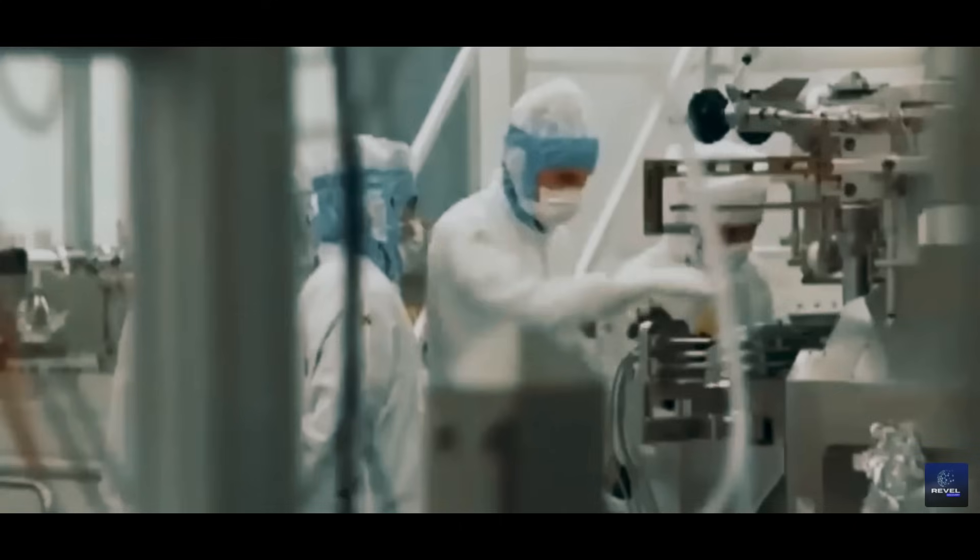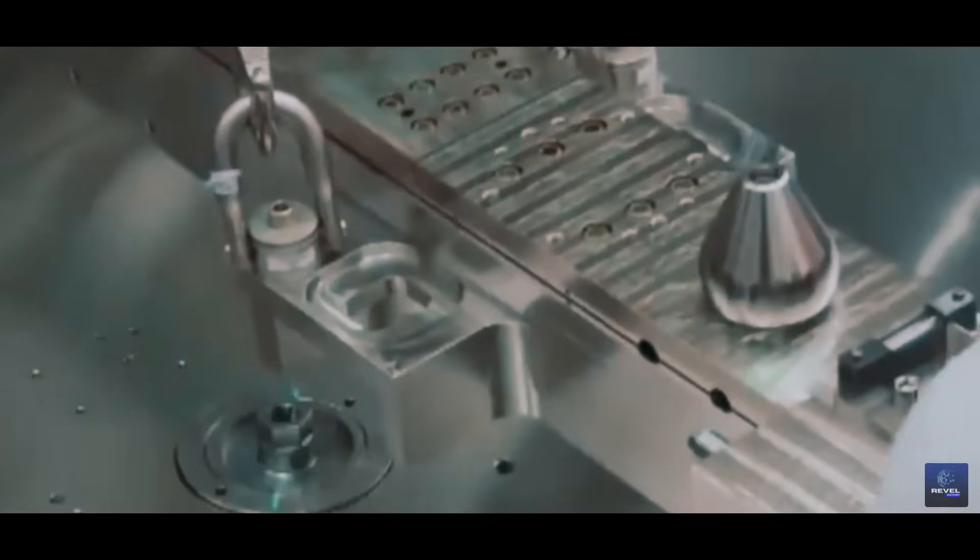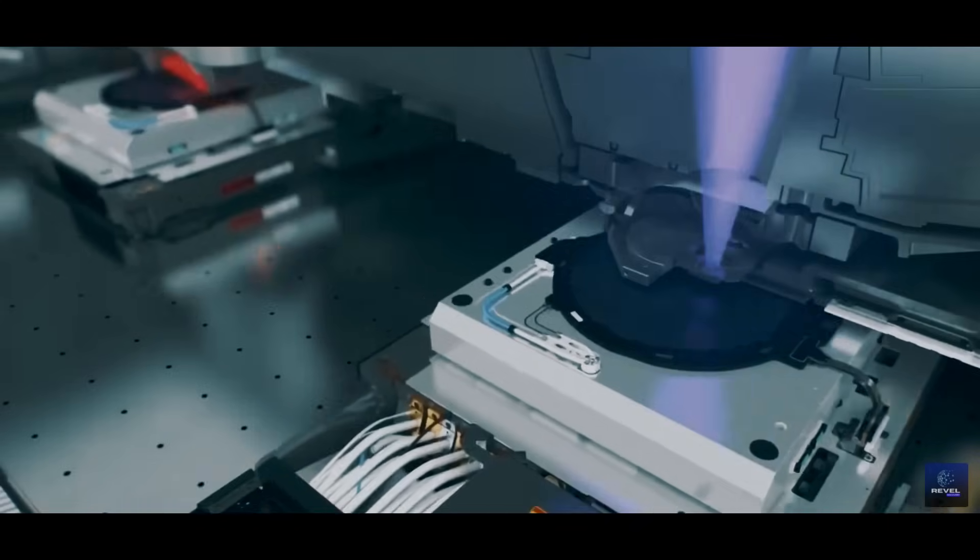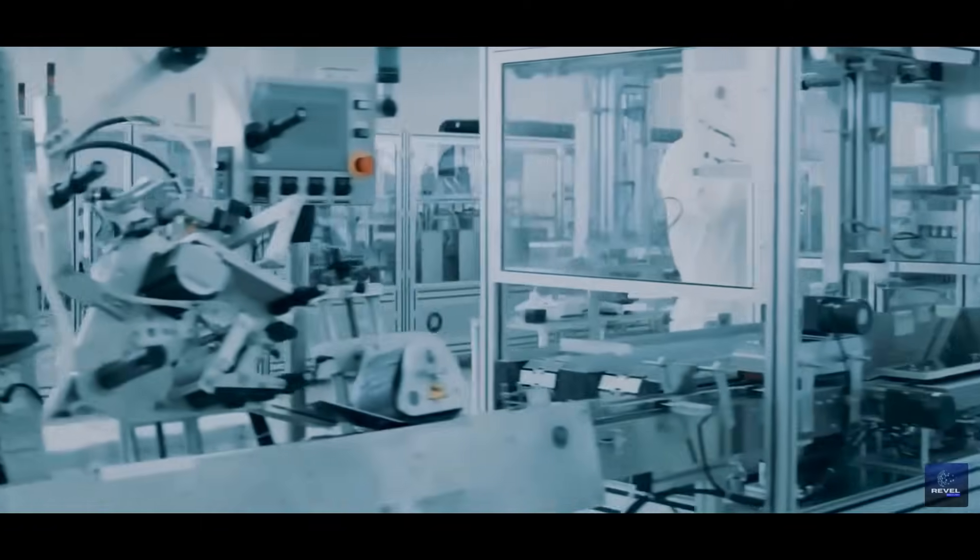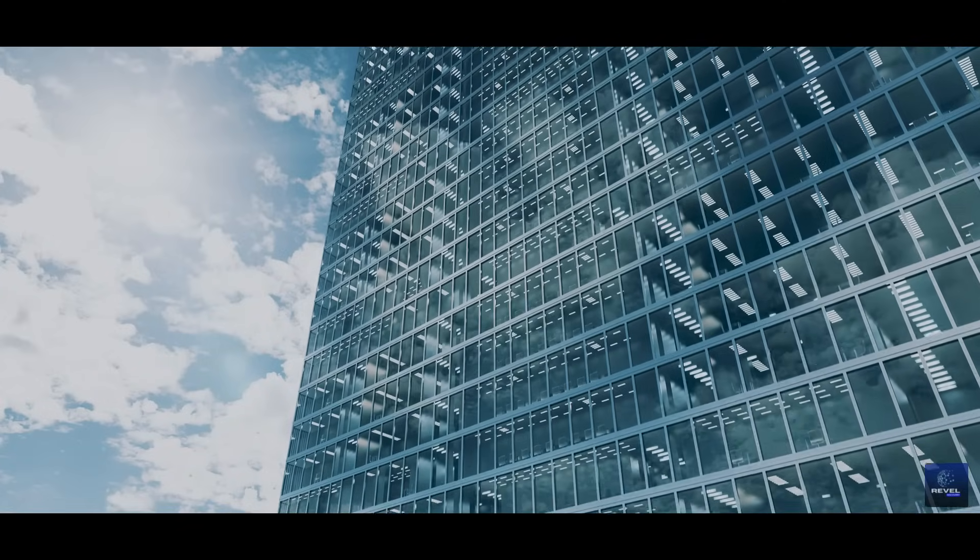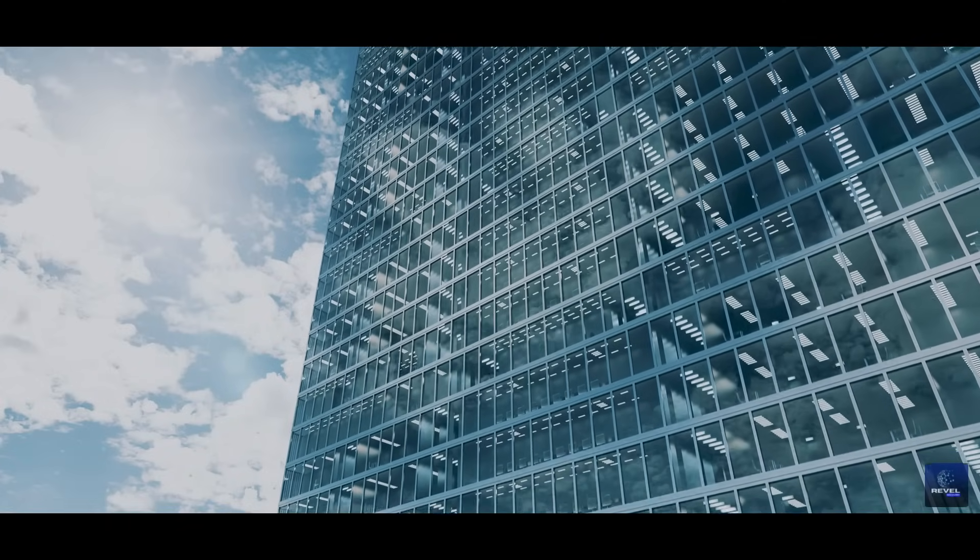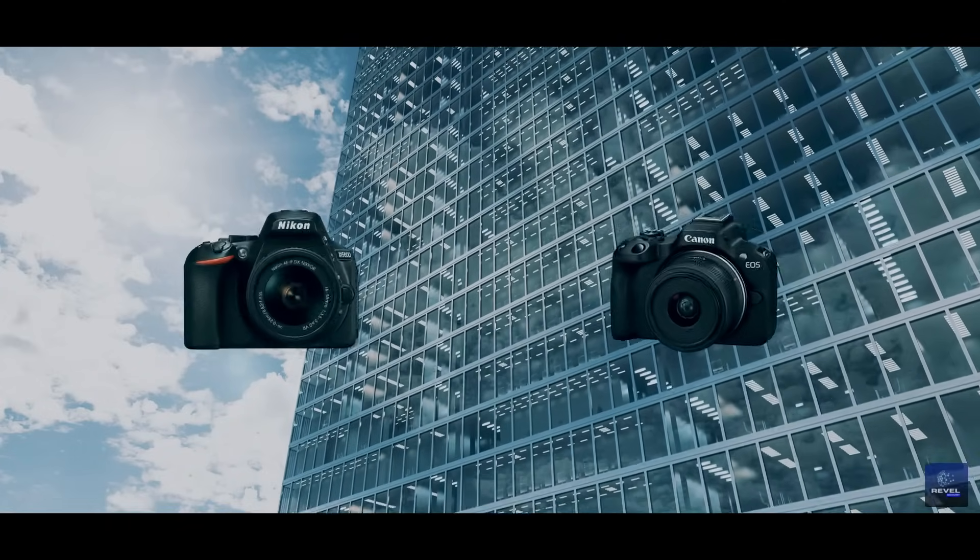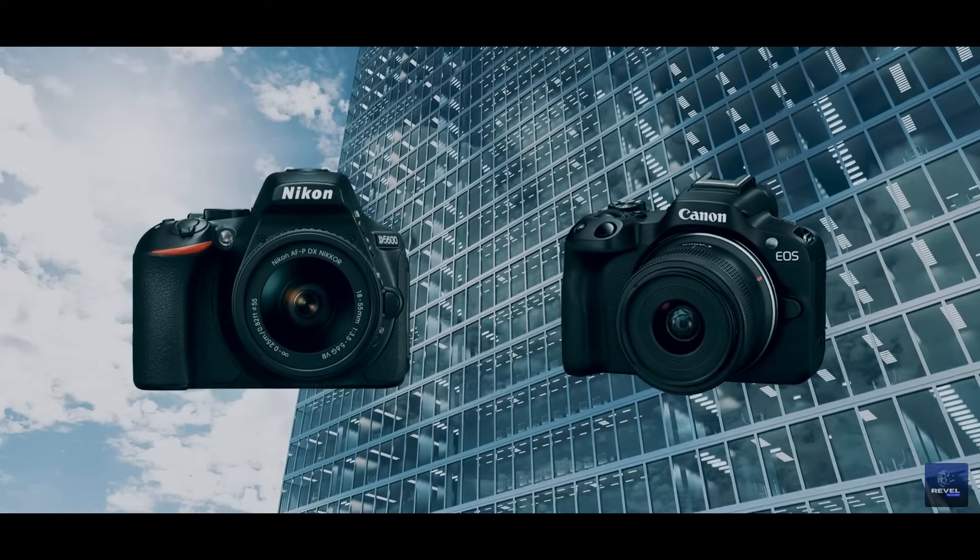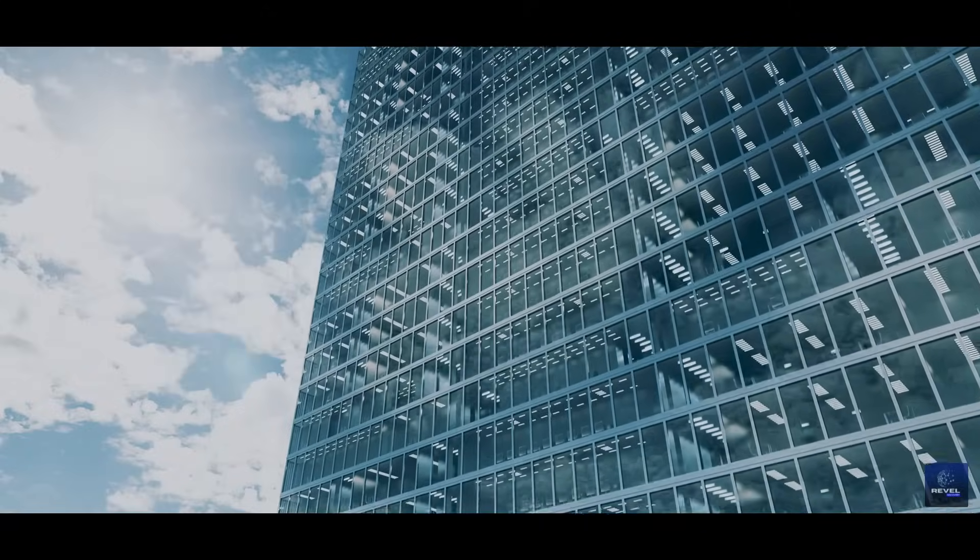Historically, lithography machines followed the dry method, utilizing progressively advanced exposure light sources to drive technological advancements. The wavelength of these light sources evolved from 365 nanometers to 248 nanometers and eventually to 193 nanometers. However, further advancement along this path became challenging. Many companies, including industry giants Nikon and Canon, attempted to enhance light sources with a 157 nanometer wavelength but encountered obstacles.